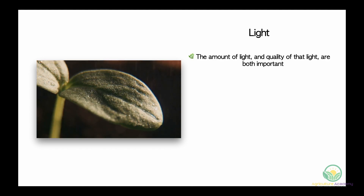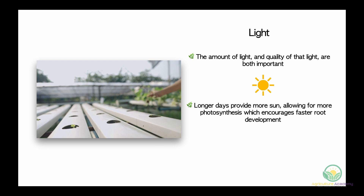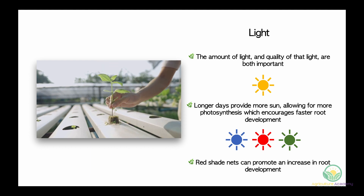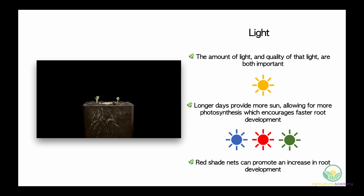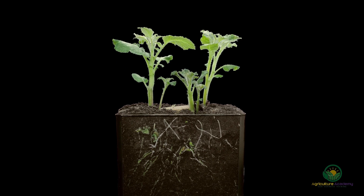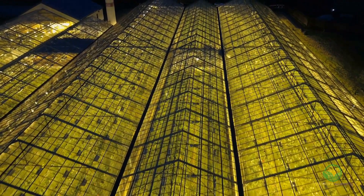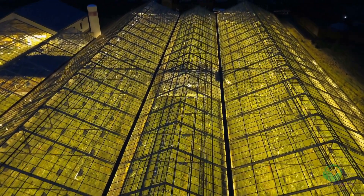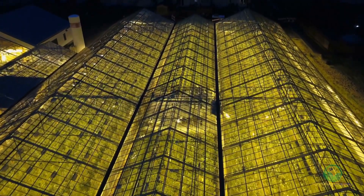The amount of light and the quality of that light are both important. Longer days provide the plants with more energy to photosynthesize, allowing roots to develop quicker. The quality or color of the light can also influence root development — red shade nets change the light quality towards the blue and green wavelengths, which has been shown to increase root development. Generally, higher light levels will lead to faster rooting. Unfortunately, higher light levels can also increase the ambient temperature, which can put severe stress on the cuttings. Growers must therefore compromise to find the highest light level without putting temperature stress on the cuttings.